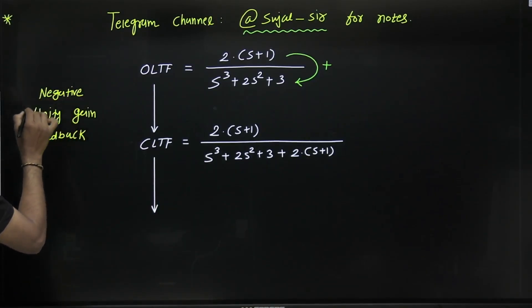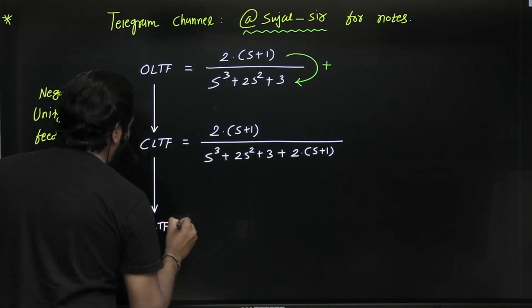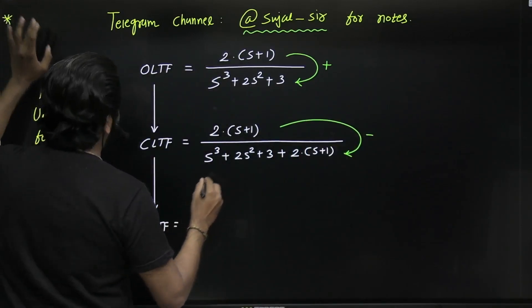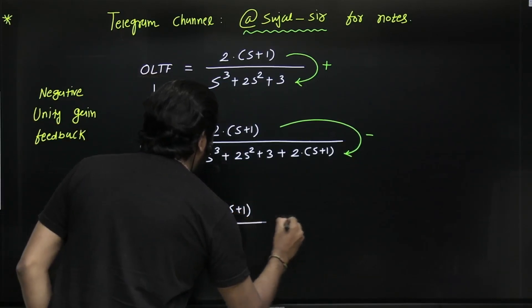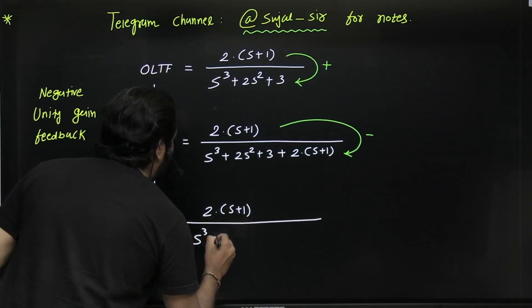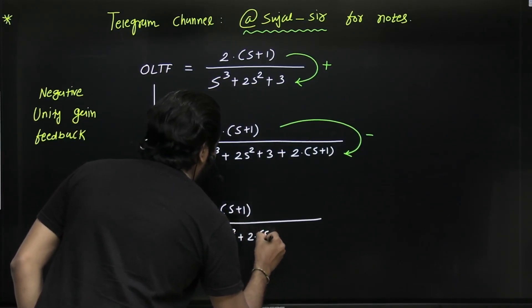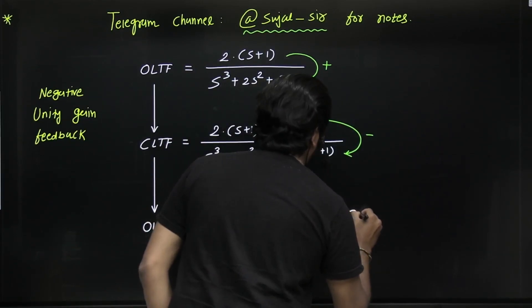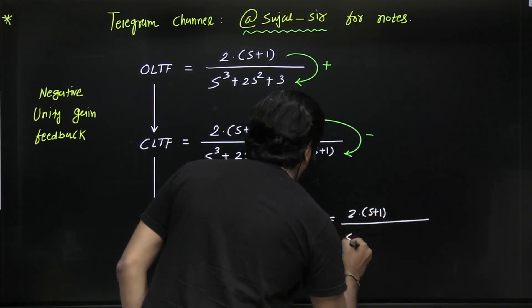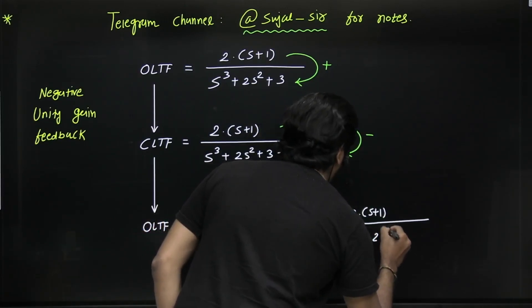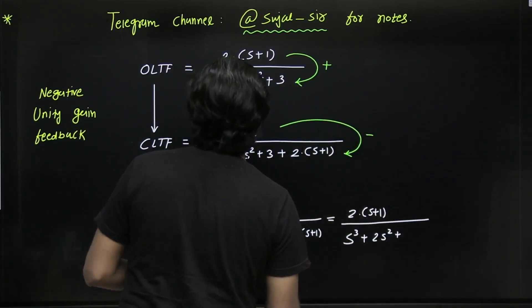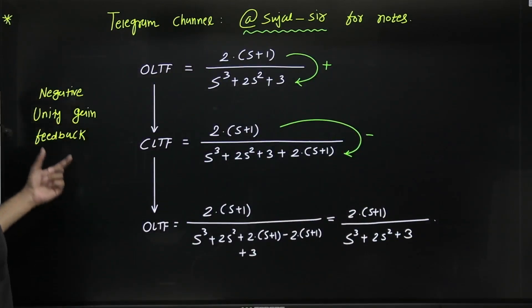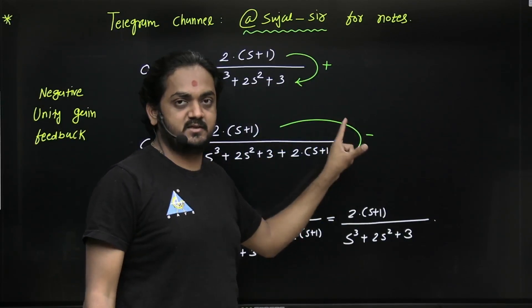Similarly, suppose the CLTF of a negative unity gain feedback system is given and you want to get the OLTF. In this case, you have to subtract the numerator from the denominator to get the OLTF. You can see here — simply subtract the numerator from the denominator. For positive feedback, just change the sign.